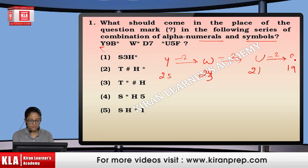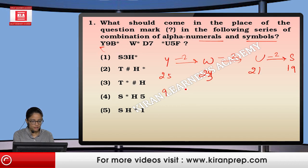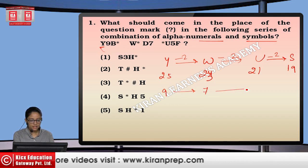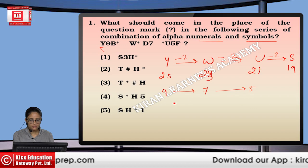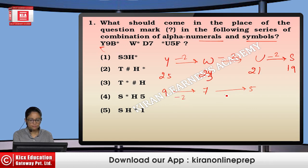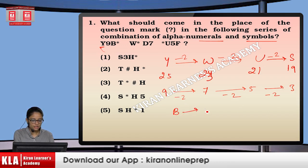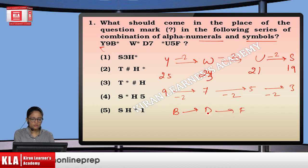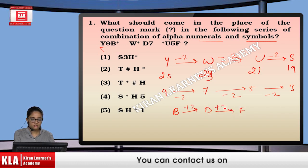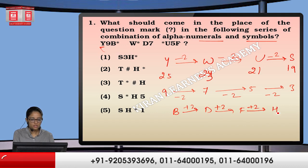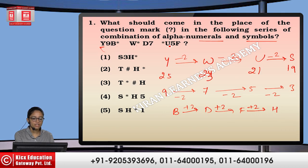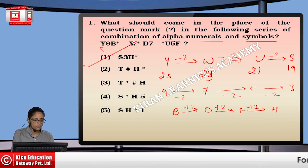Doing further minus 2 gives 19, and 19 corresponds to S. Next, the digits are 9, 7, 5 — pattern is minus 2, minus 2 — so the next is 3. For the letters: B to D to F, we are adding plus 2 each time, so F plus 2 gives H. We have the answer S3H, with a star because a star appears in every term. So the answer is the first option.